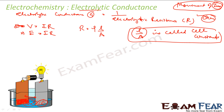The formula κ = 1/ρ is also true here. Note that pure water has very low conductivity — the bulb may not even glow. But when we dissolve electrolytes like NaCl, the bulb glows, and conductivity increases. The conductivity depends on the nature of the electrolyte: a strong electrolyte like NaCl gives more conductivity than a weak electrolyte like acetic acid.